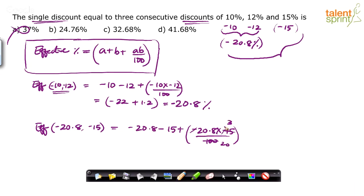Now, 62.4 by 20, how much will that be? See, 62.4 by 10 is 6.24 by 2 will be 3.12. So overall, this comes out to be 3.12. So I'll say this is minus 20.8 minus 15 is minus 35.8 plus 3.12.